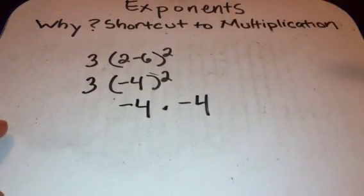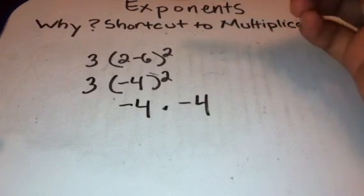Here we have a 2 minus 6 inside of our parenthesis. Once we do that, we know we have a negative 4.